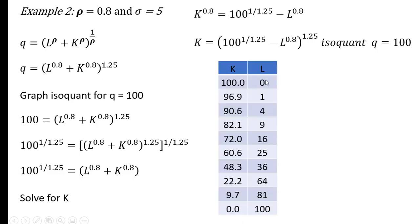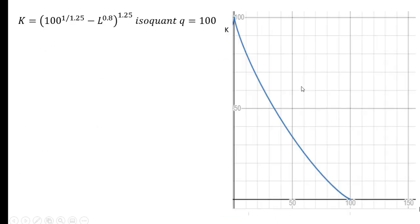As before, we can put various values of L into this equation to get the corresponding value for k. All of these combinations, if we plug into our production function here, should give us q equals 100. A graph of this curve is much straighter.